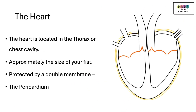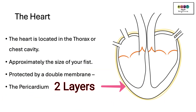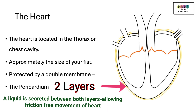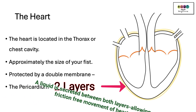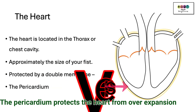The heart is located in the thorax or chest cavity. It's approximately the size of your fist. It's protected by a double membrane called the pericardium. The pericardium consists of two layers and in between each of these layers a fluid is secreted. This allows for the friction-free movement of the heart. The pericardium is there for protection — it protects the heart against overexpansion.